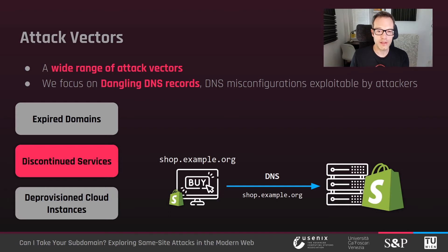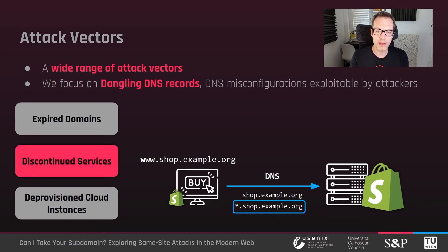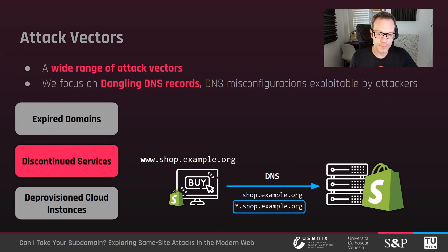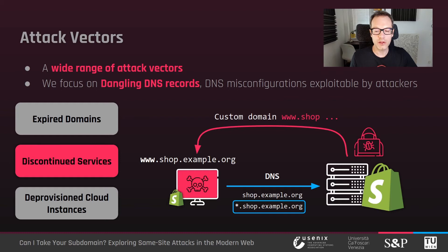I will exemplify this attack on Shopify. Assume that shop.example.org is currently configured to serve a legitimate eShop. By configuring a wildcard DNS record, Shopify also serves the legitimate eShop at the www-prefixed version, www.shop.example.org. For this reason, site operators might erroneously think that the www subdomain is implicitly bound to their account and cannot be claimed by others. Unfortunately, this was not true. Shopify did not prevent other accounts, including attackers, from claiming the www-prefixed version of an already mapped domain, resulting in a subdomain takeover and site impersonation.